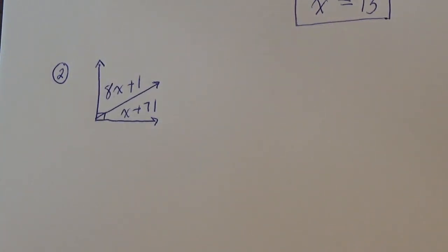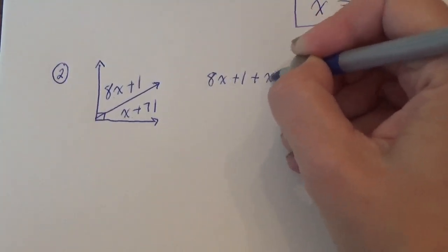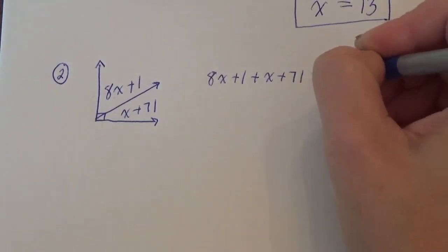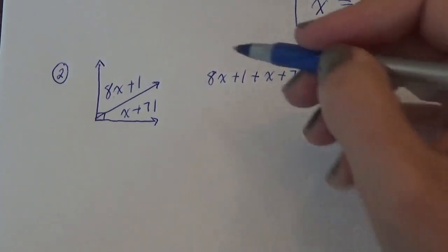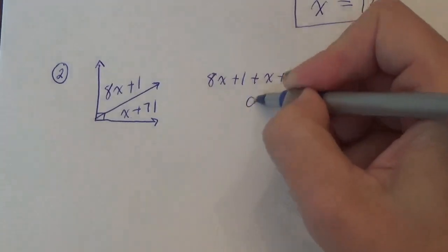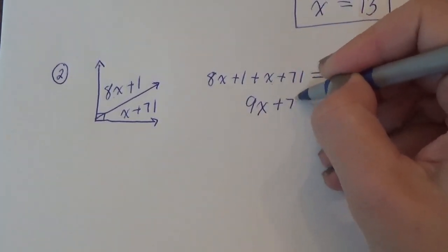Can we write the equation? Yeah. Because of this picture, those two things should add up to 90. Right? They're in a 90 degree angle. That's what they have to add up to. So 8x plus another x. That's 9x. 1 plus 71 is 72.